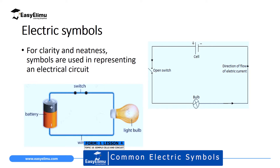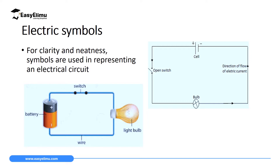Previously when we discussed a simple circuit, we realized we can draw a cell very large, with a positive terminal indicated on each side and a negative terminal indicated on each side. A switch is very large also, and a bulb is also very large, with a wire of very large diameter. But now, for clarity and neatness, symbols are used to represent electrical circuit components. Instead of drawing a battery like that, we draw it with the positive terminal as a long line and the negative terminal as a very small short line, with a wire connected to it.